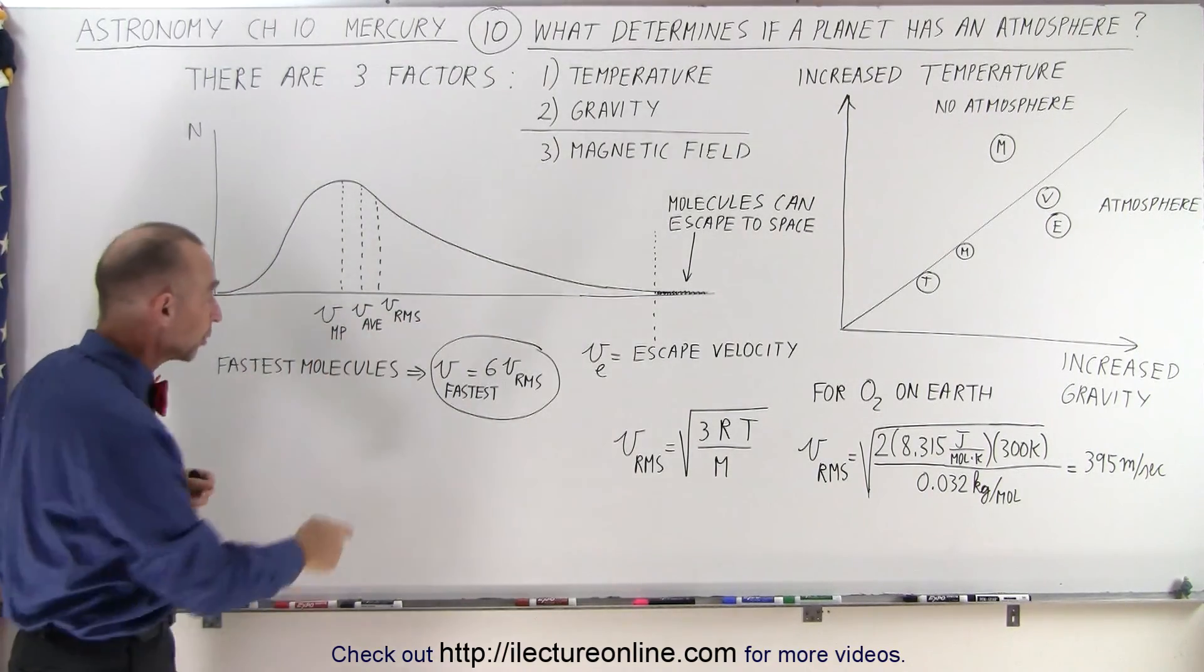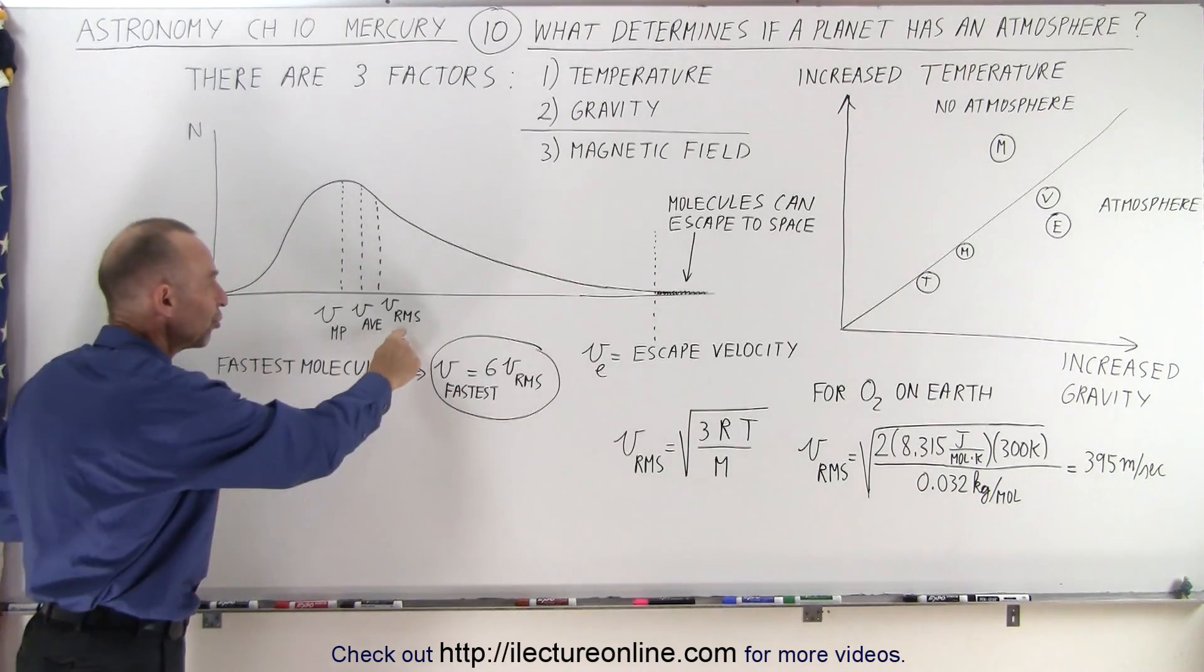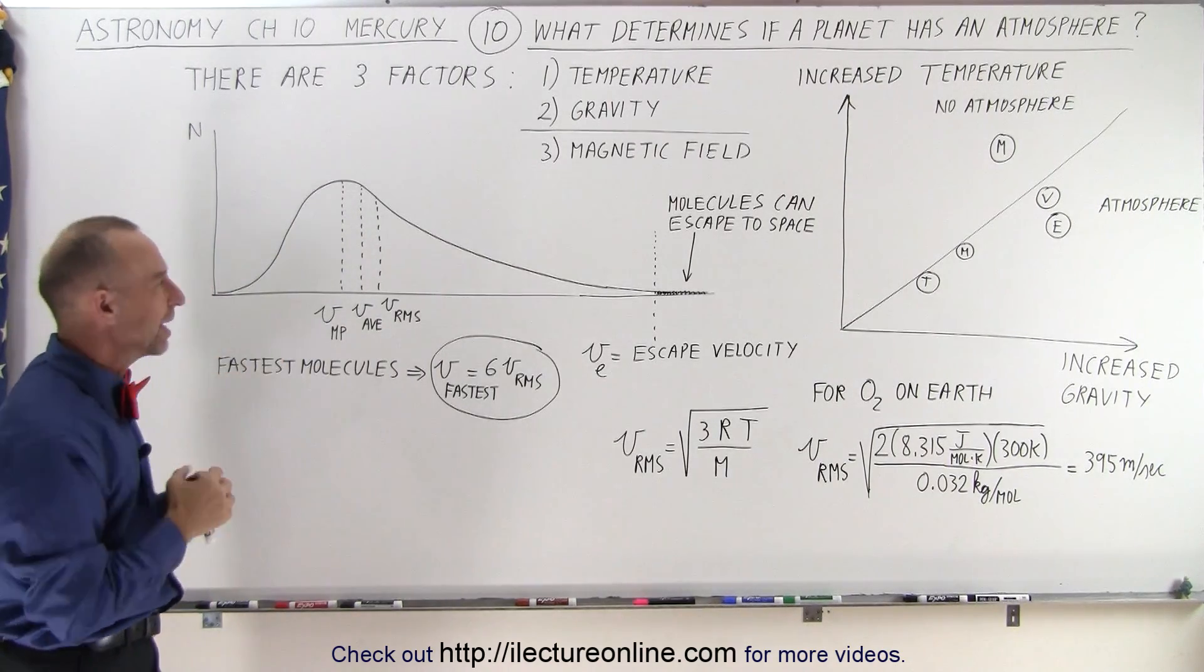Then we have what we call the average velocity, if you add up all the velocities of all the molecules and divide by the number of molecules, you get the average or the mean. And then we have what we call the RMS, the root mean square velocity, which is kind of like the effective velocity of the molecules in the atmosphere.